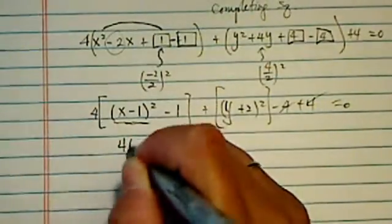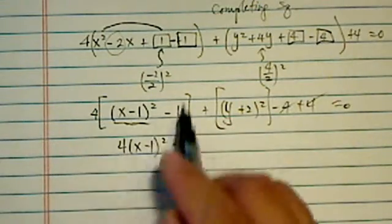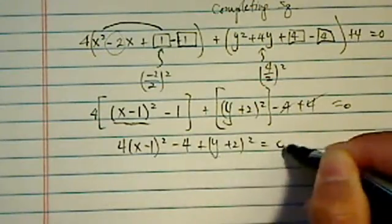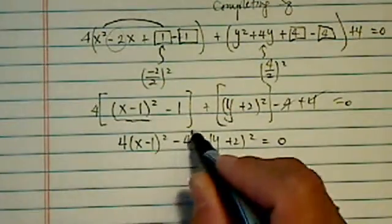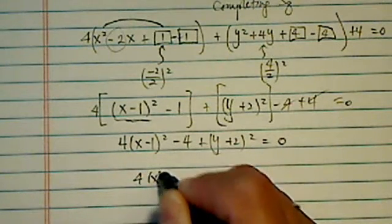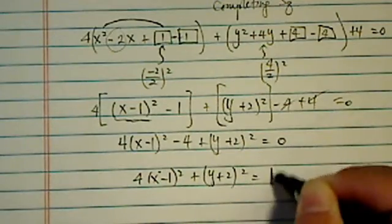Okay, so I'm going to distribute a 4 in there, and then let's leave this one alone, equal to 0. Next steps, I'm moving this 4 over. So I have 4 times x minus 1 squared plus y plus 2 squared equal to 4.